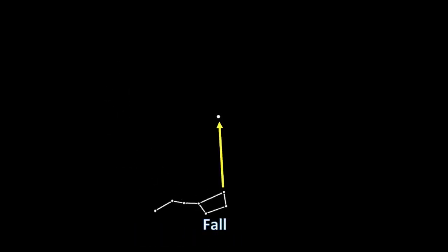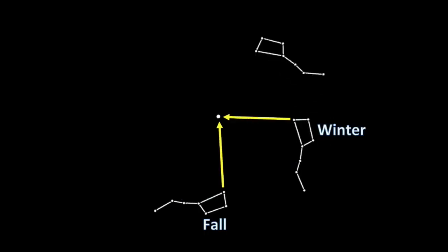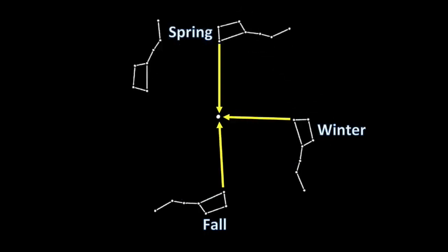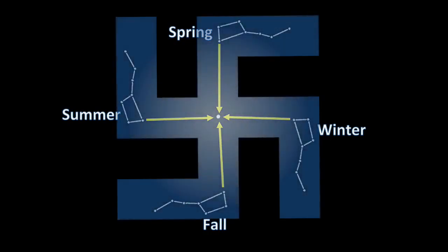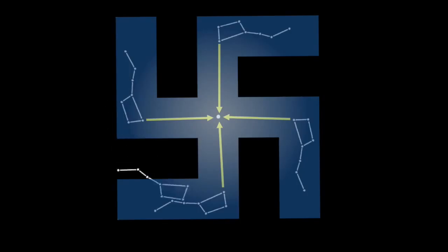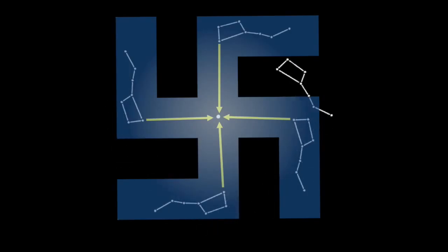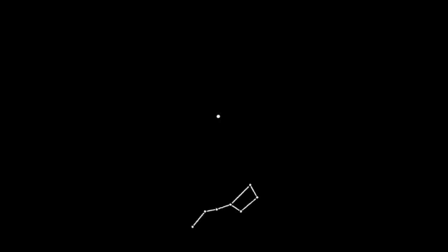This shift causes the constellations to be in a different spot throughout the year, giving us fall, winter, spring, and summer — the four seasons. This symbol is an ancient symbol. You might know it as the swastika, but what it really represents is the four seasons. If you were to look at the Big Dipper throughout the year, it constantly points to the North Star, which never moves — your spring, summer, fall, and winter. Unbelievable stuff, and it never stops.